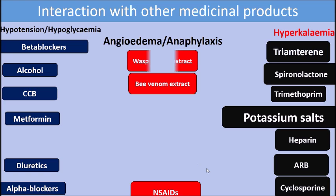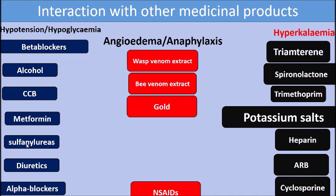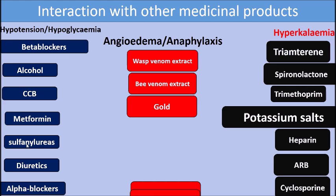The second group covers hypotension and hypoglycemia. ACE inhibitors reduce blood pressure, so combining with other drugs that reduce blood pressure — beta blockers, alcohol, calcium channel blockers, diuretics, alpha blockers — can cause severe hypotension. For anti-diabetic drugs like metformin, sulfonylureas, and insulin, which cause hypoglycemia, ACE inhibitors can exacerbate the hypoglycemic effect. The third group is drugs causing angioedema and anaphylaxis — including wasp venom extract, bee venom extract, and gold — which are better avoided with ACE inhibitors.